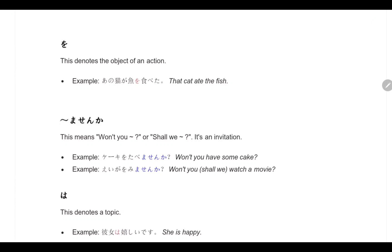Once again the sentences are: Ano neko ga sakano wo tabeta - the cat ate the fish. Keki wo tabe masenka? Ega wo mimasenka? Next, for wa, Kanojo wa ureshi desu. So these are the grammar for today. Arigato gozaimasu. Ja, matane.